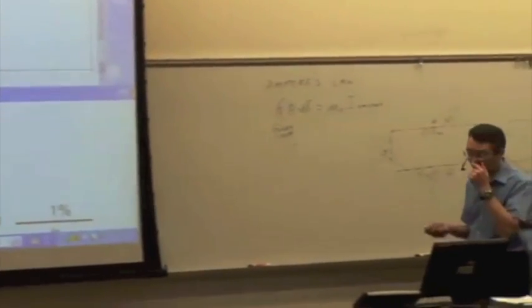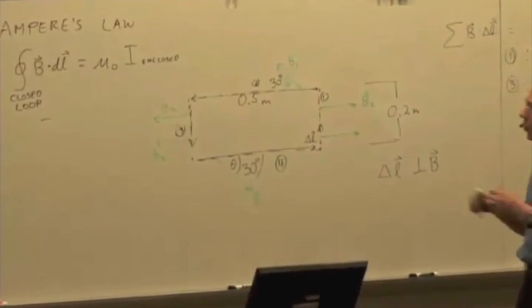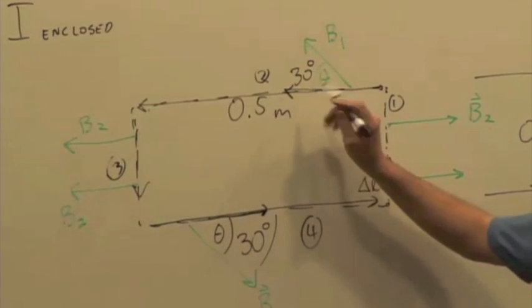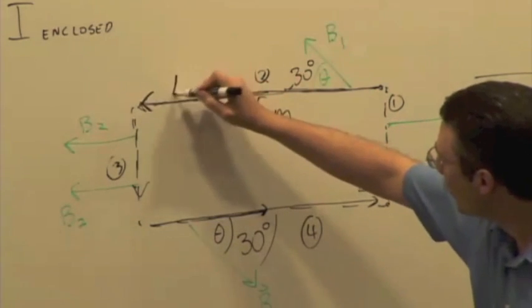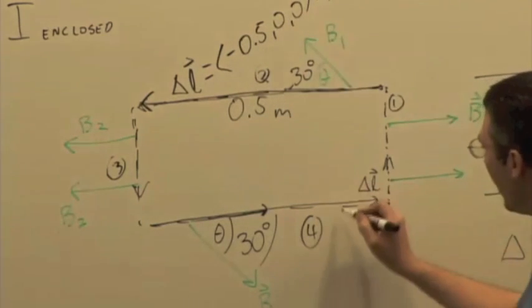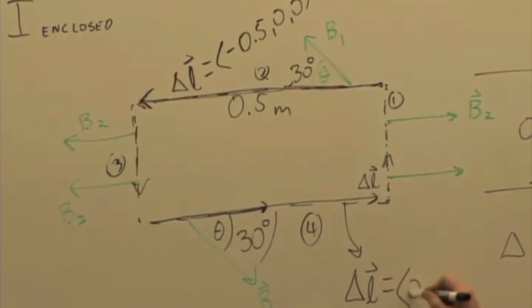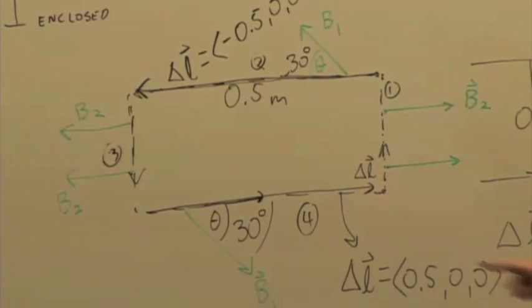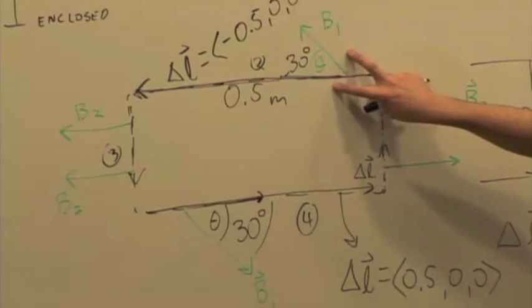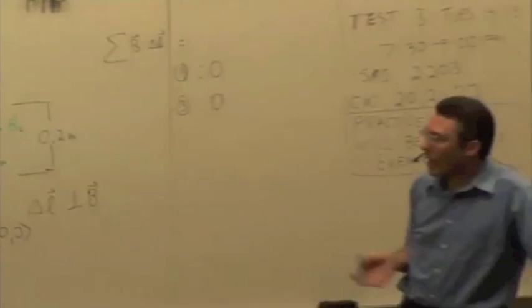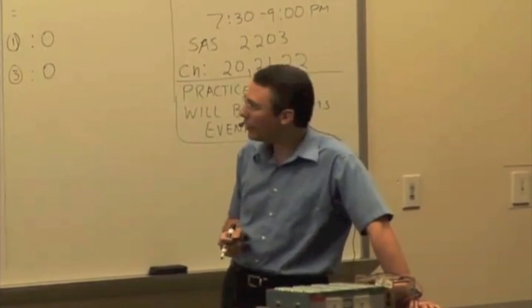You're going to get, and so some people were just having a conversation, why isn't it 0? Well, because you get a positive contribution at the top and you get a positive contribution at the bottom because your delta L vector here is in the negative x direction. So that delta L is going to be negative 0.5, 0, 0 meters. Down here, delta L would be positive 0.5, 0, 0. On the top, you have a negative x component for delta L and a negative x component for B1. On the bottom, you have a positive x component for delta L and a positive x component for B1. So when you do those dot products, you get a positive dot product at the bottom.